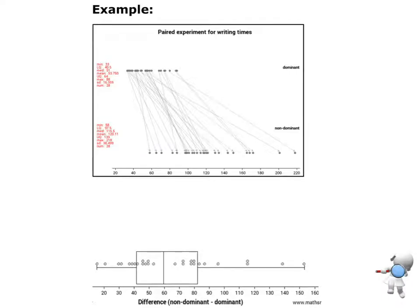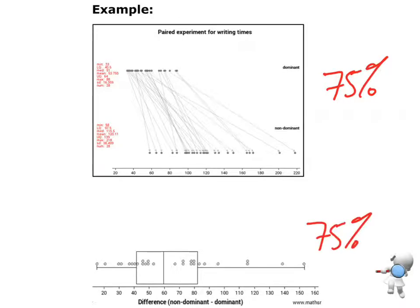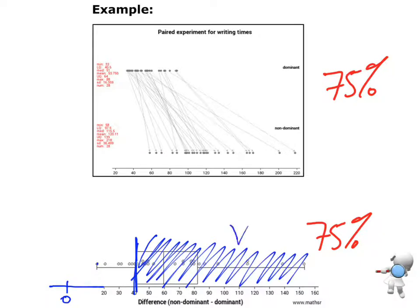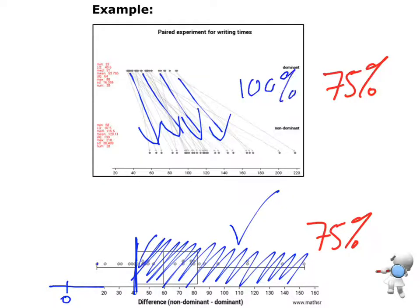Here's our example of writing times — dominant versus non-dominant hand. The key idea is we're looking for 75% of the arrows going in one direction, or 75% of the values in the dot plot being positive. If I take my lower quartile — first, think: where is zero? Zero is going to be down about there. In this case, if I draw my lower quartile and shade in everything above that, I can say yes, more than 75% of my data is above zero. In fact, 100% of my arrows are going in that direction — that's more than 75%. I've got sample sizes of about 20 in each group, so that 75% rule works well for this.